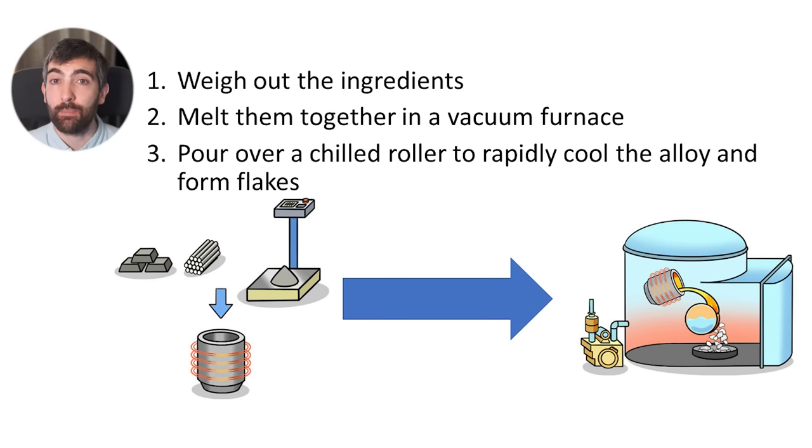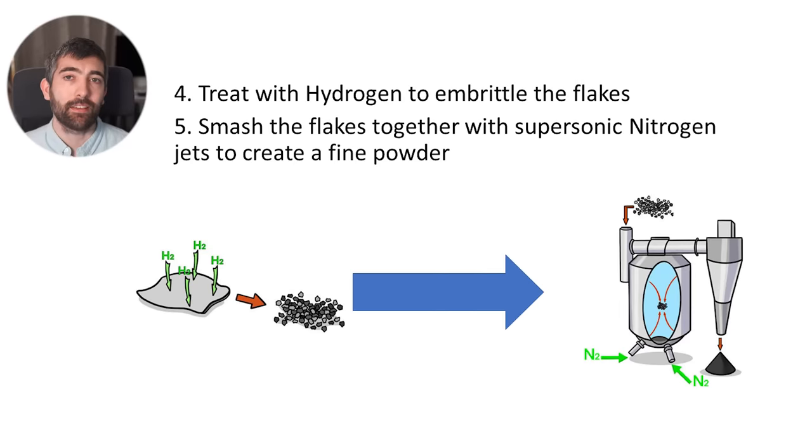Once we've got that molten neodymium magnet mix we pour it over a chilled roller to rapidly cool it down make it form back into a solid and produce these little flakes of neodymium magnet material. It's really important that we cool the mix really really fast because we don't want to give any time for all of the elements that we mixed together to be able to separate out during the cooling process. They all need to stay mixed up to form the material that has that super strong magnetic property. Then we take those neodymium magnet flakes and we treat them with hydrogen gas and that hydrogen gas chemically reacts with the grain boundaries within those flakes and makes them super brittle, super crumbly.